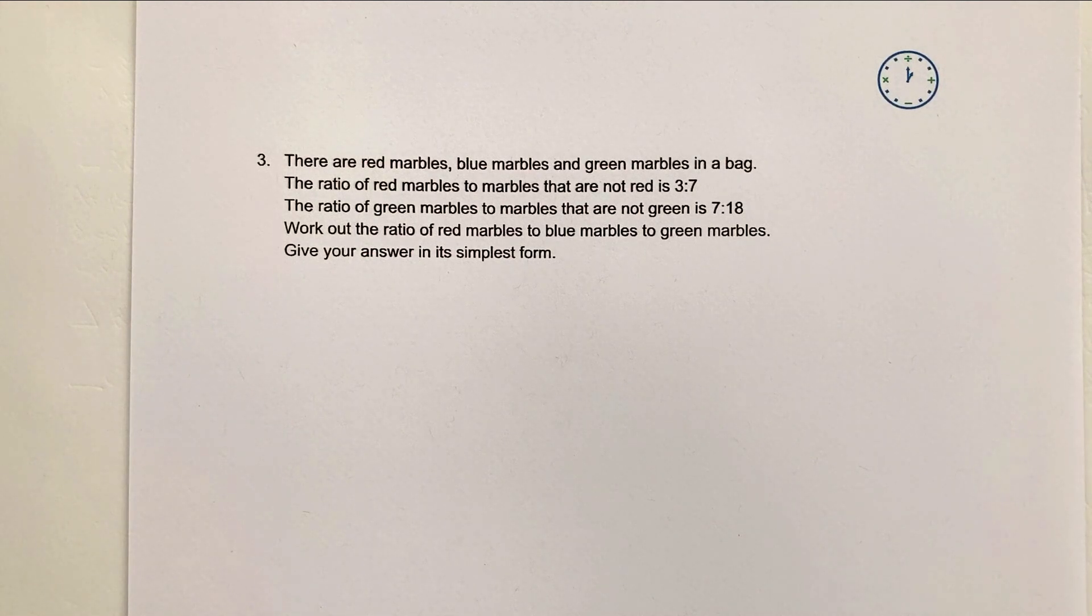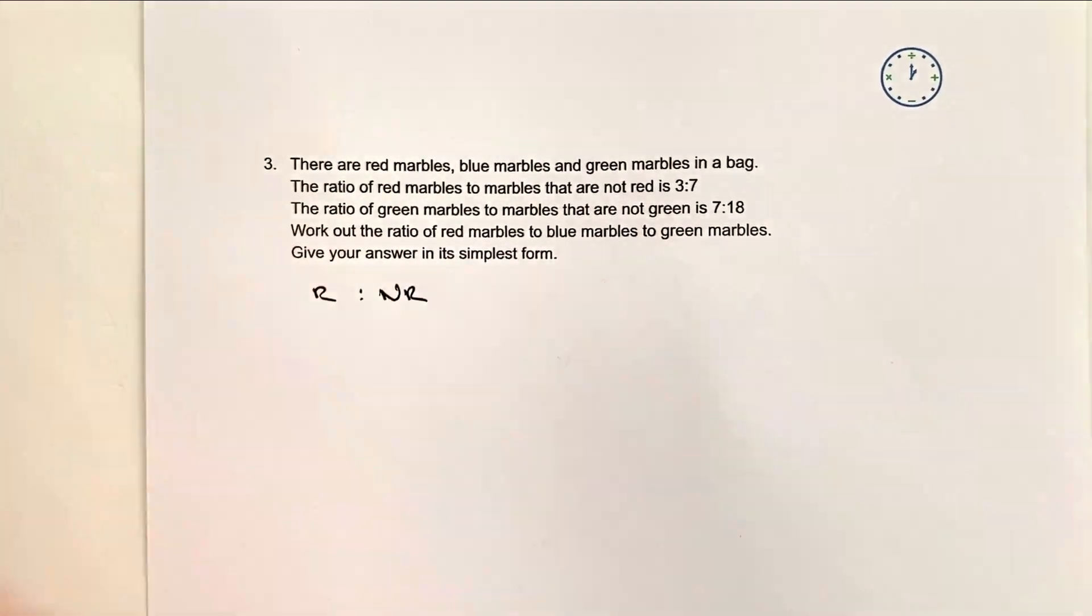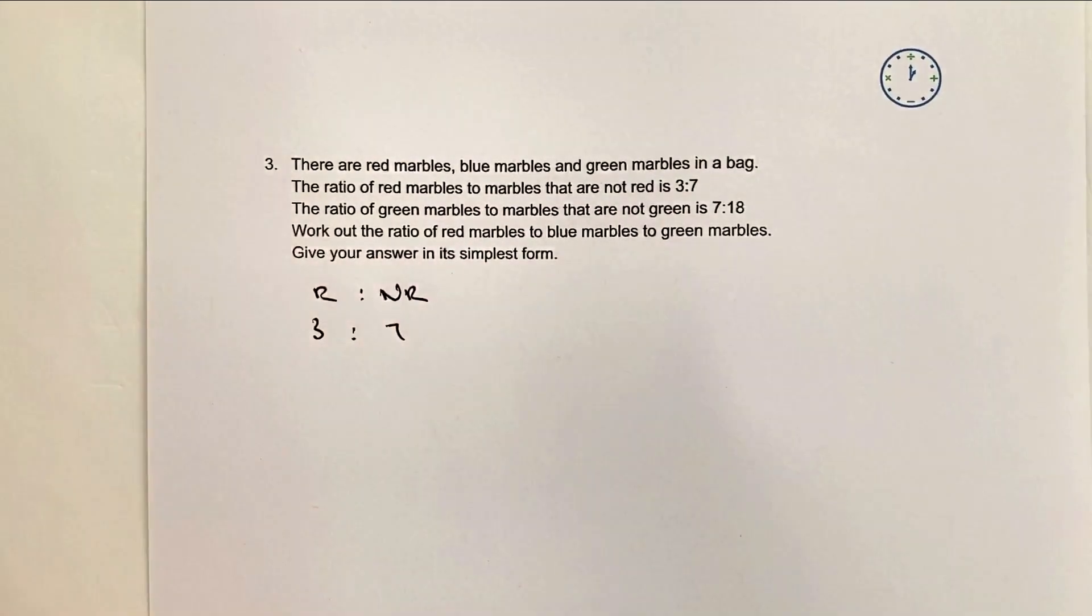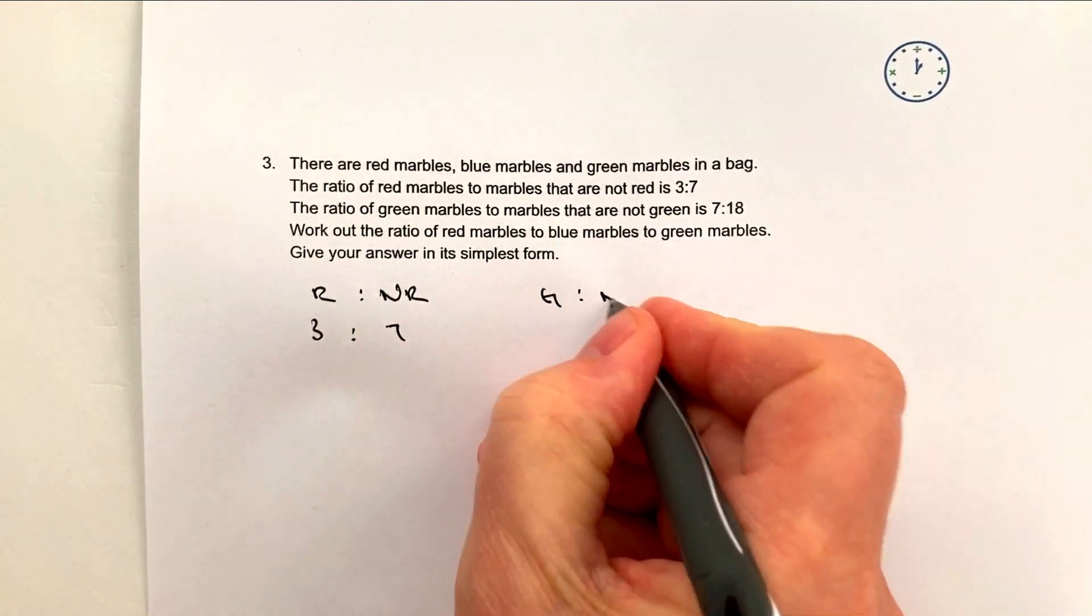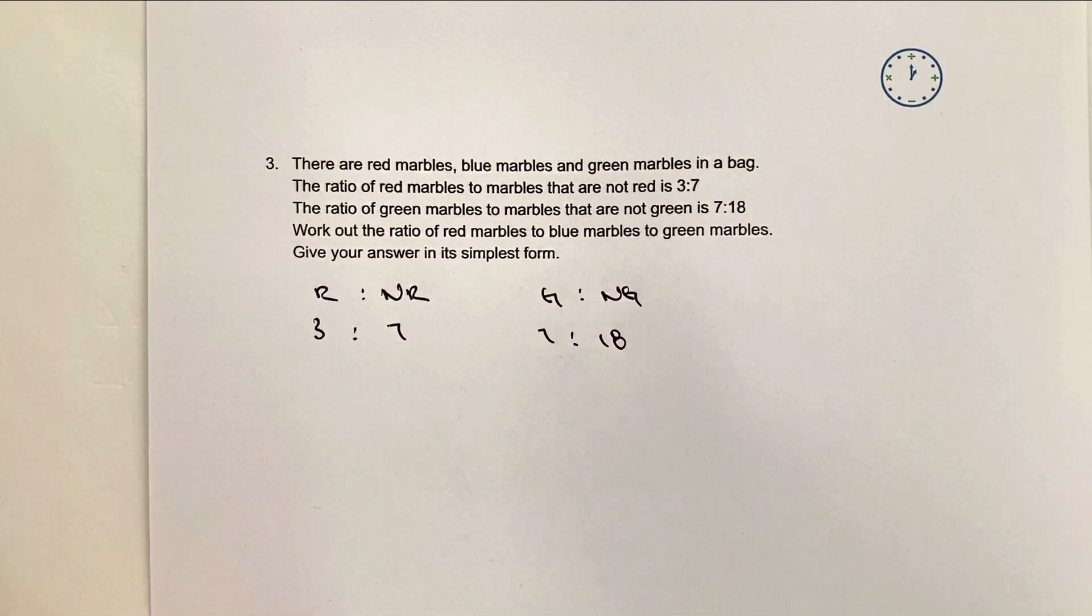So let's look at what we've got at the moment. We've got red to not red, okay, well that's going to be 3 to 7. And then we've got green to not green and that's going to be 7 to 18.